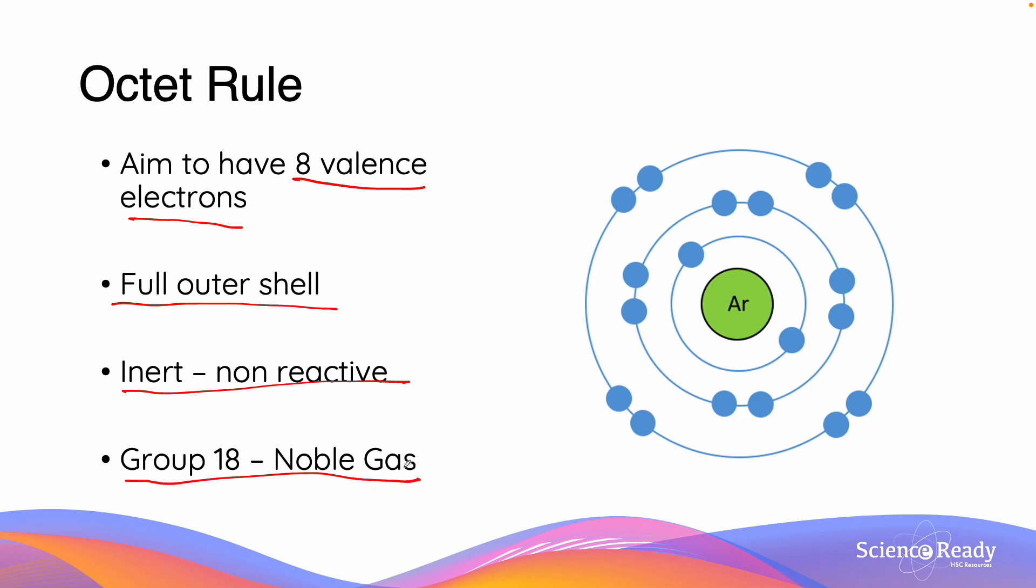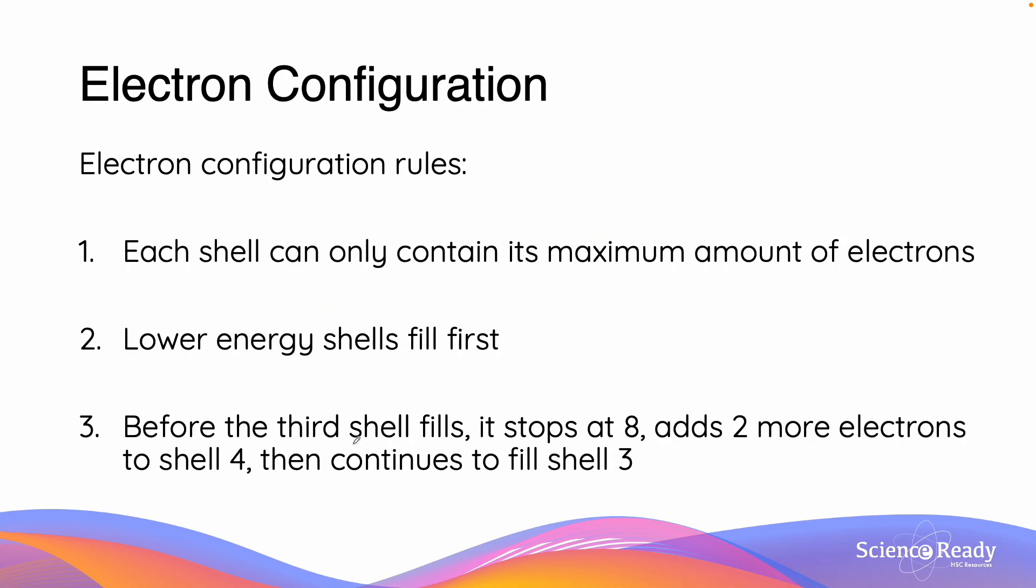When we are figuring out the electron configurations of different atoms, there are 3 particular rules. The first is that each shell can only contain its maximum amount of electrons. This means that there cannot be more than 2 electrons in shell 1, 8 in shell 2 or 18 in shell 3 and etc. The second one is that lower energy shells will fill first. This means that the first electron shell will fill first, then the second, then the third.